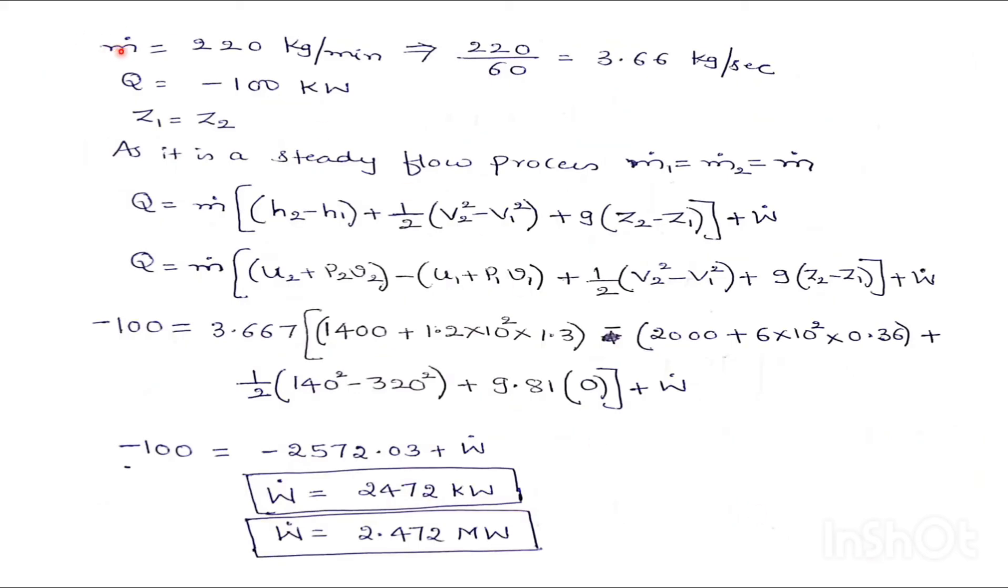See here, mass flow rate he has given 220 kg per minute. So we have to convert it in SI units, that is kg per second. So 220 divided by 60, we get 3.66 kg per second.